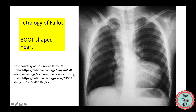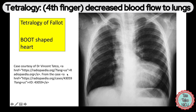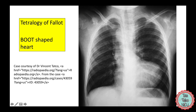Tetralogy of Fallot is number four — it has four features, and this finger is down in 'I love you,' so there is decreased blood flow to the lungs. We'd expect the lungs to be darker, which we do see. Because there's an obstruction to blood leaving the right ventricle, it becomes a bit bigger, making up a large part of this boot shape. Because there's decreased flow through the pulmonary artery, we see a concave area there. That's creating the classic boot-shaped heart. Tetralogy of Fallot probably most commonly actually looks boot-shaped.